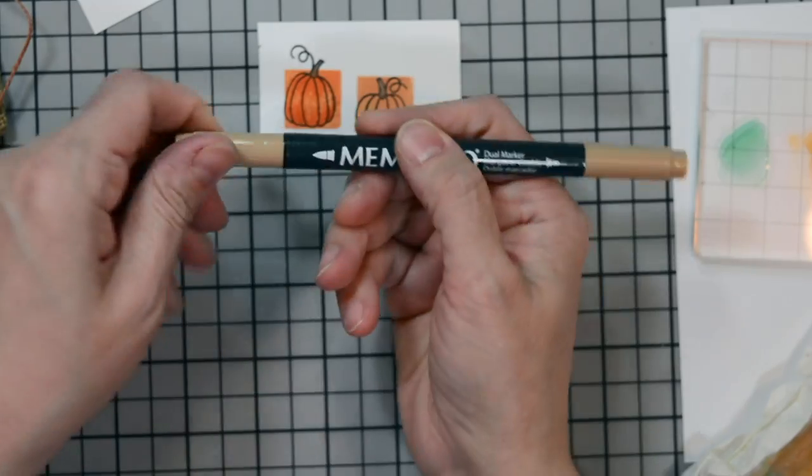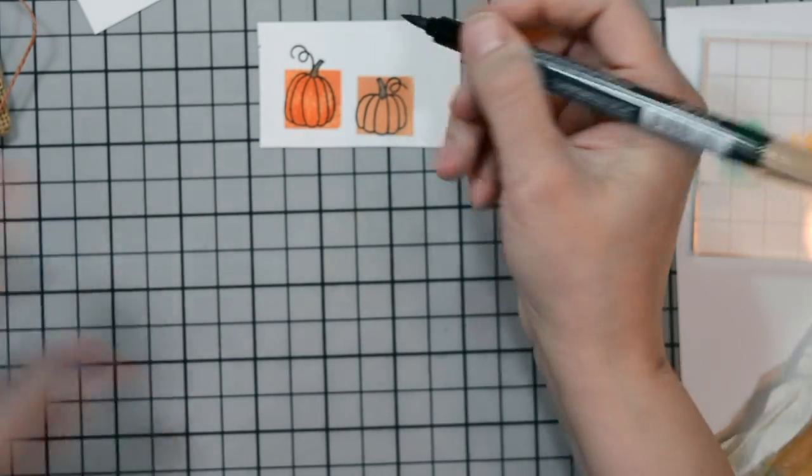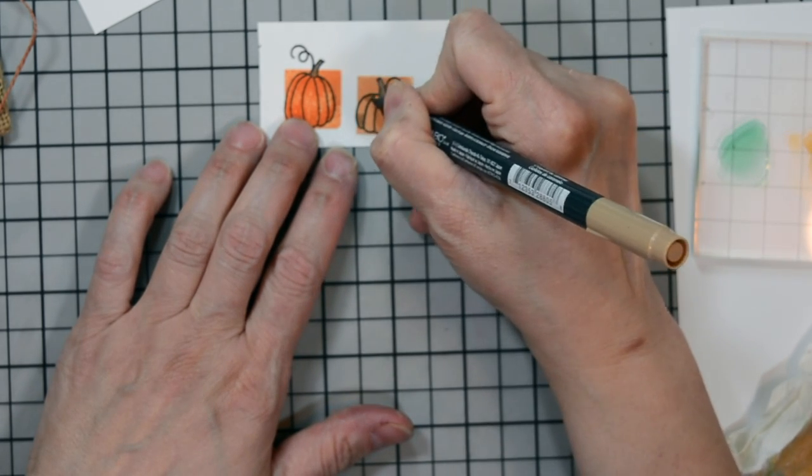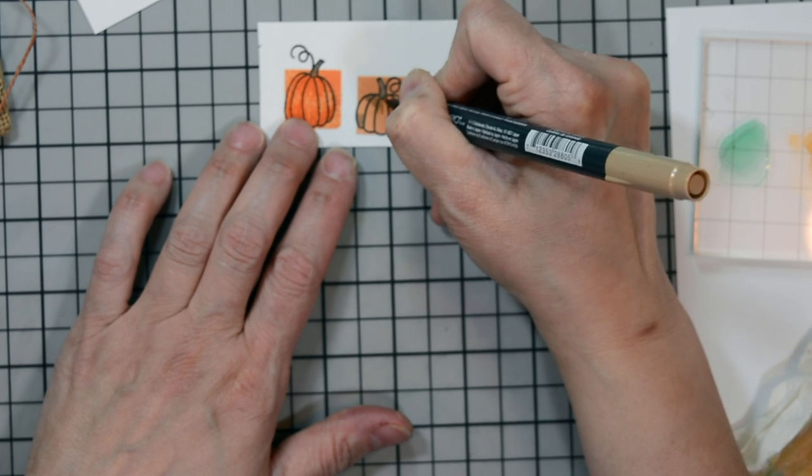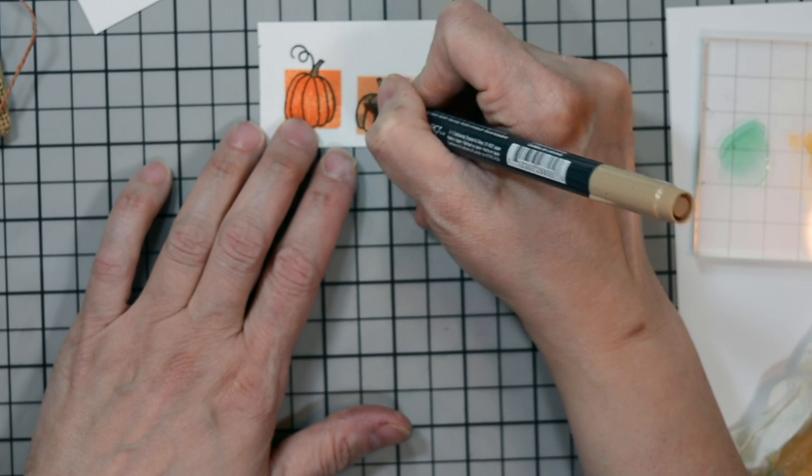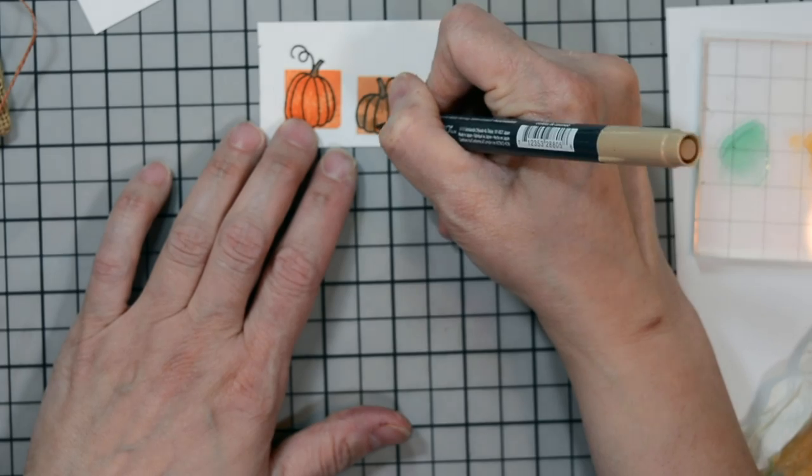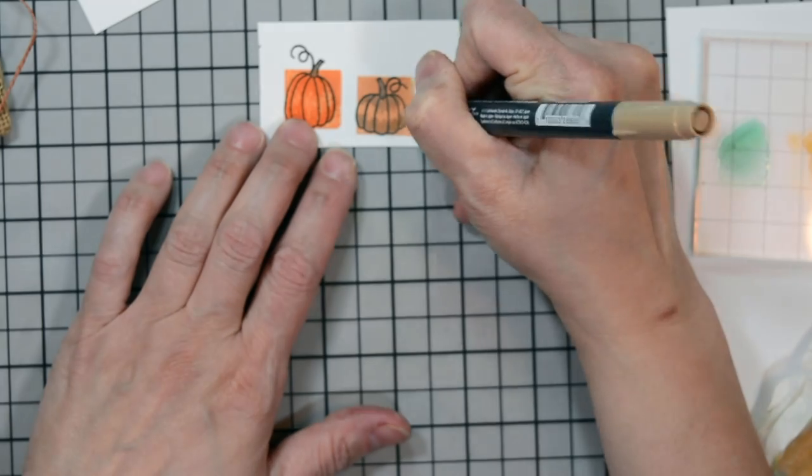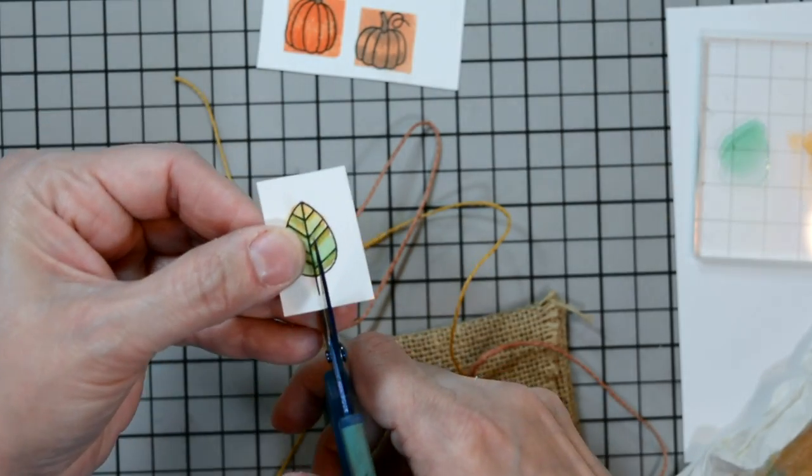So now for our pumpkin spice one, I'm going to use the toffee crunch on it because it is a little bit more of a brown color. It's orange, but it tends to go a little more brown. I'm going to do the same thing, repeat the process. And now our pumpkins look like two different distinct colors. And this also adds a nice variety.